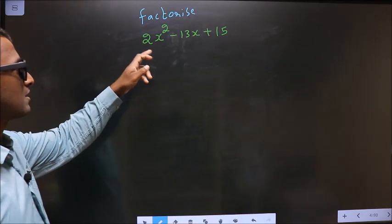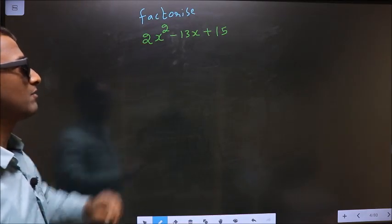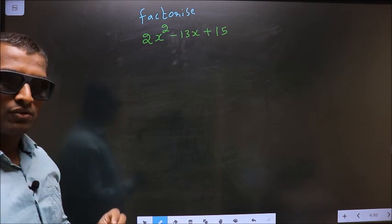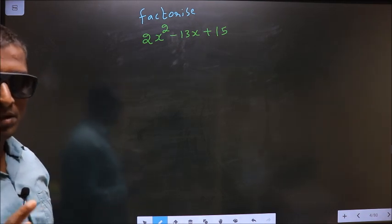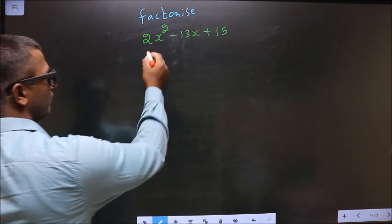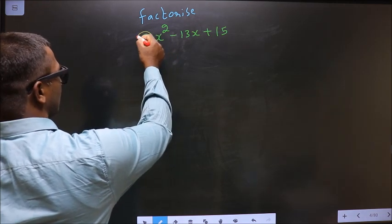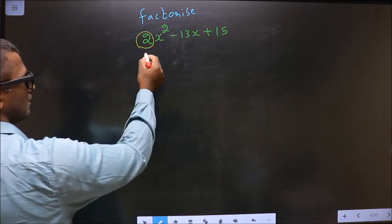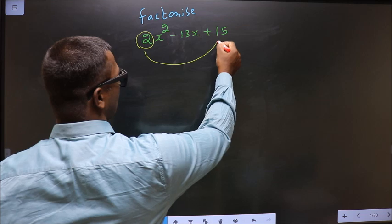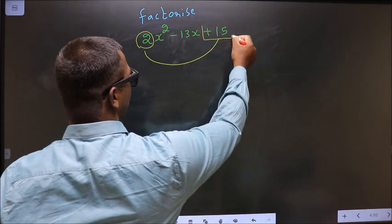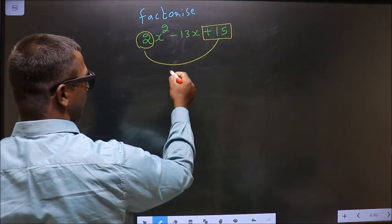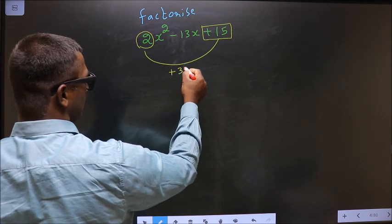Factorize 2x² - 13x + 15. To factorize, step 1: The coefficient of x², that is +2, should be multiplied to the constant, that is +15. So 2 × 15 results in +30.